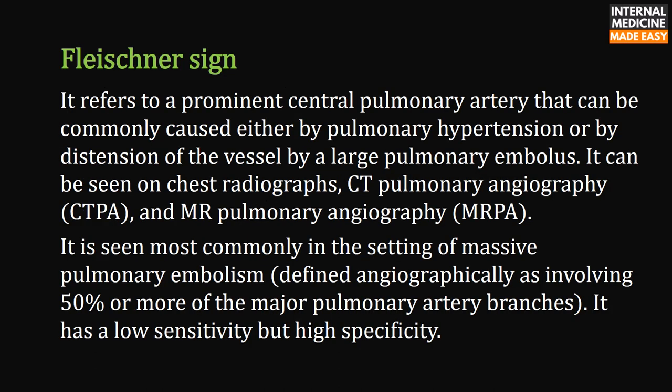The Fleischner sign refers to a prominent central pulmonary artery that can be caused either by pulmonary hypertension or by distension of the vessel by a large pulmonary embolus. It can be seen on chest radiographs, CT pulmonary angiography, and MR pulmonary angiography. It is most commonly seen in massive pulmonary embolism, defined angiographically as involving 50% or more of the major pulmonary artery branches, and has low sensitivity but high specificity.